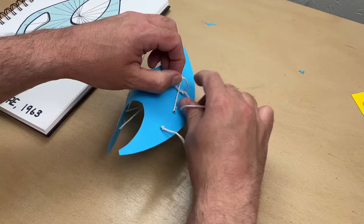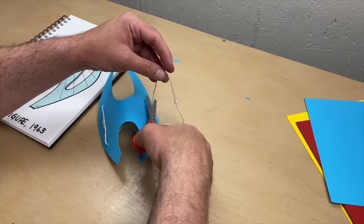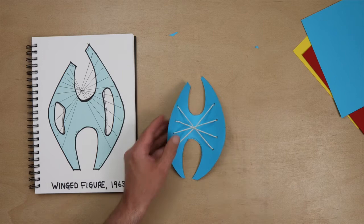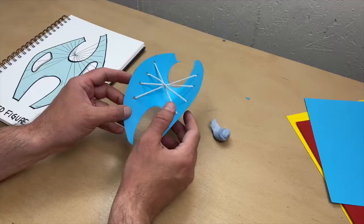Make sure to pull the string nice and tight to create tension and bend the card. Then tie a final knot, snip any excess string, and use a bit of blue tack to stick it to the wall.